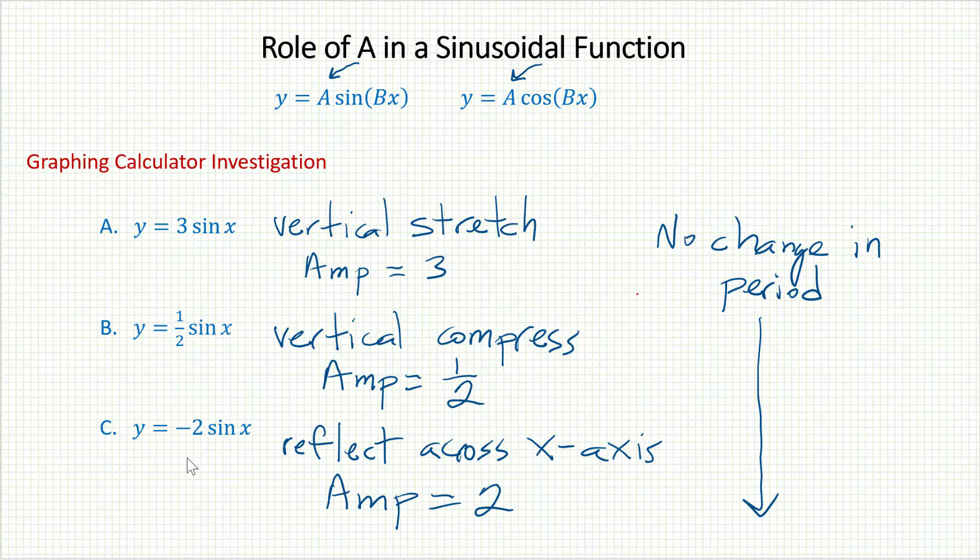So it looks like the negative a caused that reflection. Notice that the value of 2, though, since it's bigger than 1, still caused the graph to vertically stretch so that the new amplitude was 2.